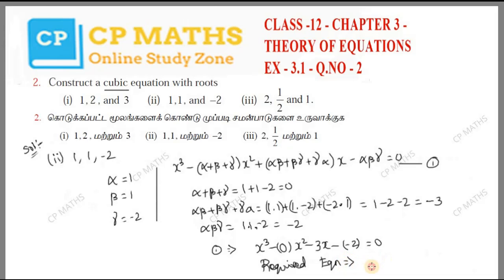So the final required equation is x³ minus 3x plus 2 equals 0.